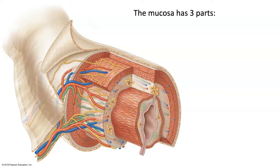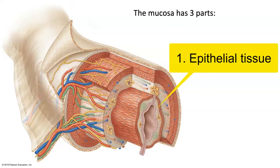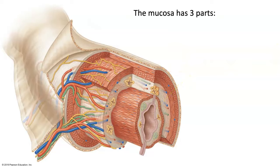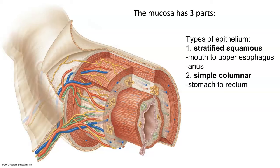The innermost layer of the GI tract called the mucosa has three parts. The epithelial tissue is the innermost layer — that would be the type of tissue that is directly contacting the contents or the food inside of the GI tract. The type of epithelium present depends on where you're looking at. Stratified squamous is found at the start and at the end of the GI tract, and then simple columnar is found in the middle.